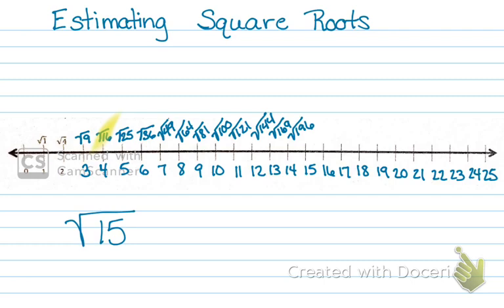25 is higher than 15, so I'm going to go below. So it is actually between the square root of 9 and the square root of 16. So we can think about where it's falling. This is 3 and this is 4. So it's somewhere in the middle.